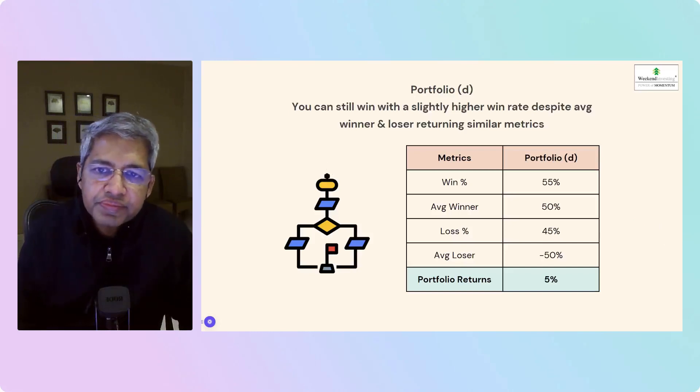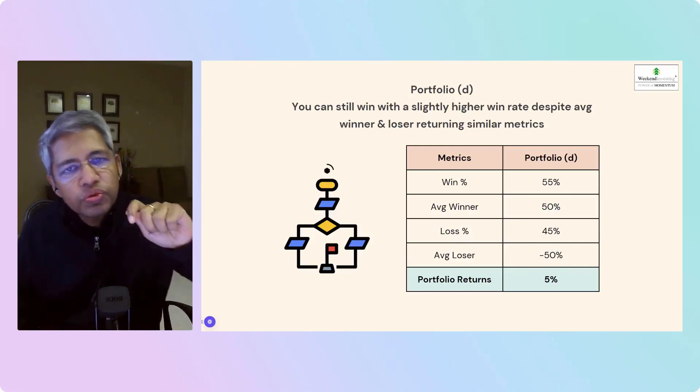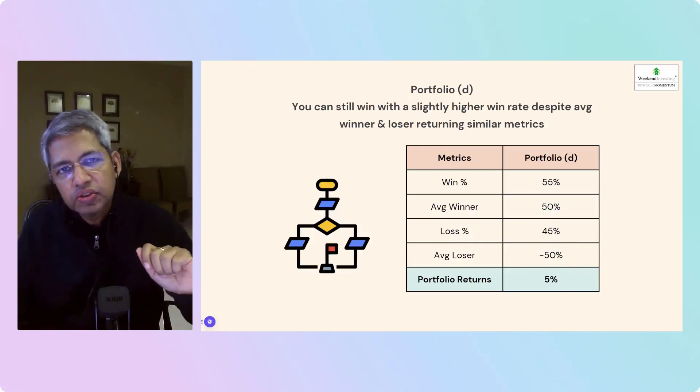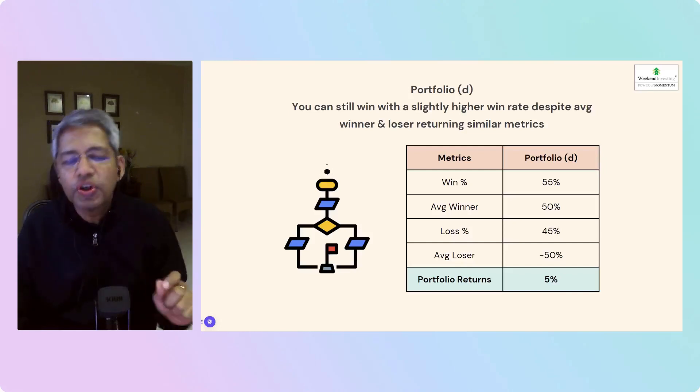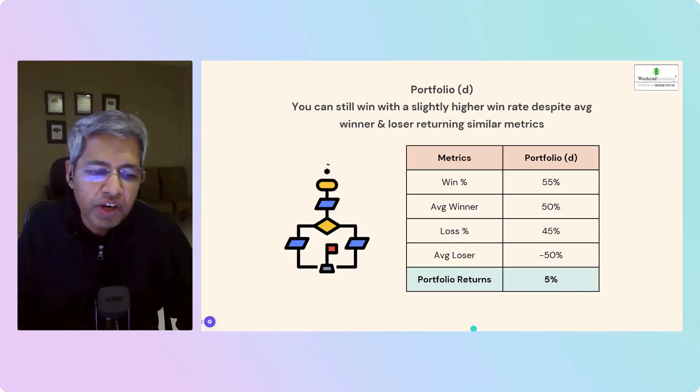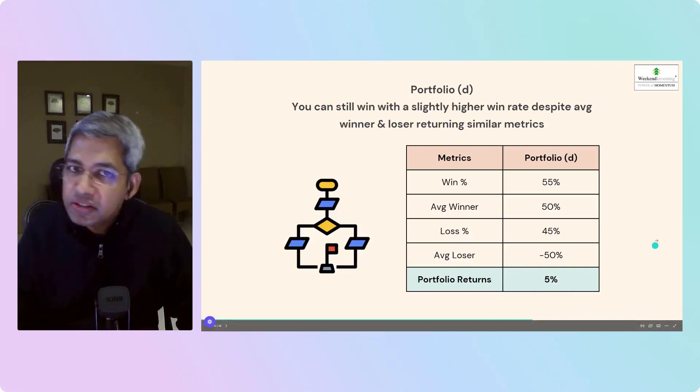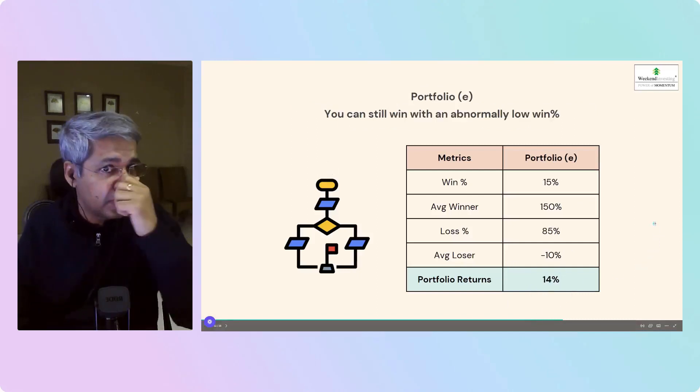Now Portfolio D: the average winner brings home 50% and the average loser also brings 50%. We just have to win more than we lose here. So if we win even 55% of the times and we lose 45% of the time, we bring home 5% on the overall. Not bad given that we had a 50-50 average win and average loss.